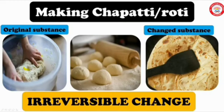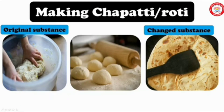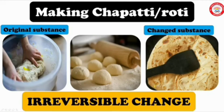But roll out a chapati from the ball of dough and bake it on a tawa. Was it possible to get back the ball of dough again? No. This is an example for irreversible change.